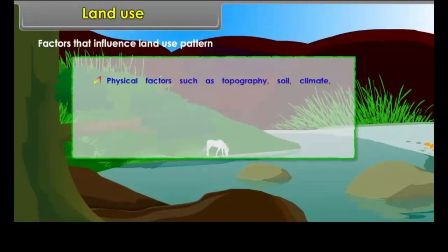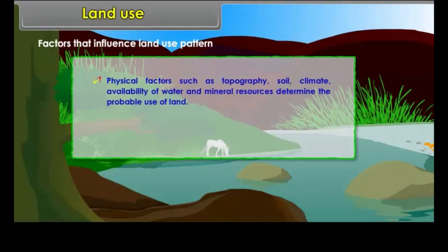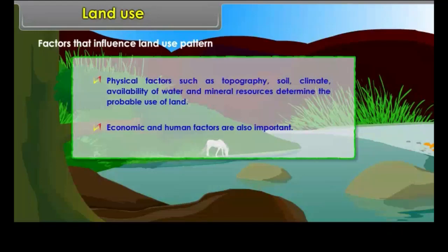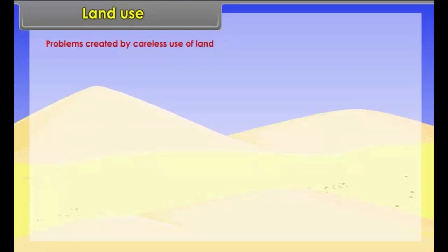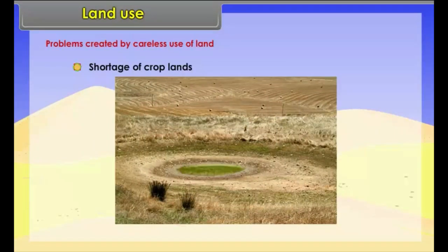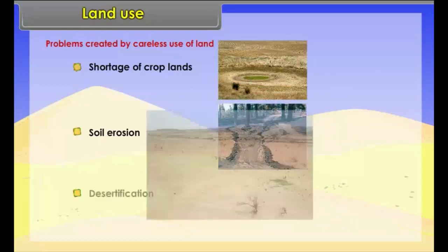Physical factors such as topography, soil, climate, availability of water and mineral resources determine the probable use of land. Economic and human factors are also important. Careless use of land creates serious problems such as shortage of croplands, soil erosion, and desertification.